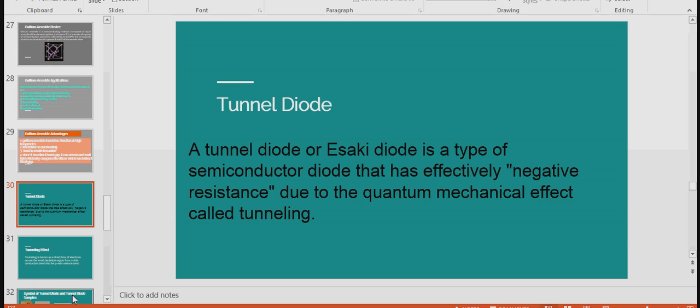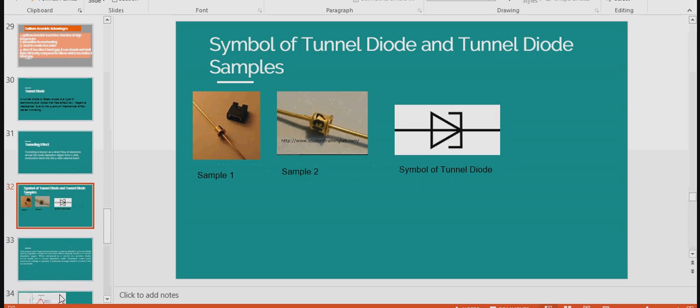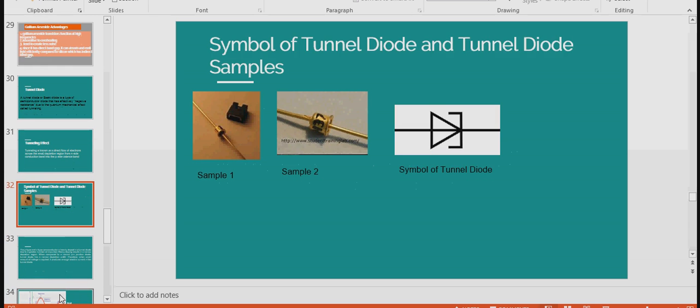Tunnel Diode. Examples for Gallium Arsenide device like Laser Diode and LDR were already discussed in class 2. A Tunnel Diode or Esaki Diode is a type of semiconductor diode that has effectively negative resistance due to the quantum mechanical effect called tunneling. Tunneling is known as a direct flow of electrons across the small depletion region between N-type and P-type semiconductor. The figure shows sample of tunnel diodes, sample 1 and sample 2, and a symbol of tunnel diode.